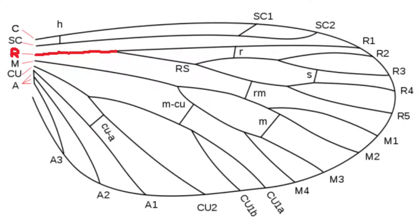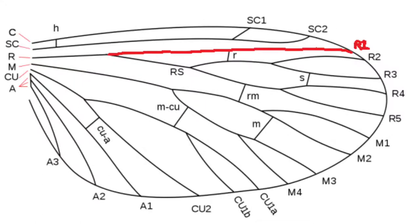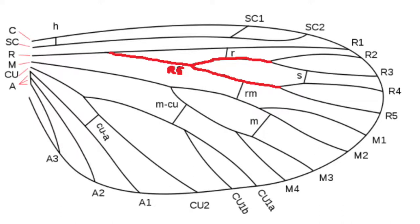Now we're moving down again to the radius. The radius first branches off into R1. The other branch is the radial sector, which actually splits right in the middle, but it's all one vein.